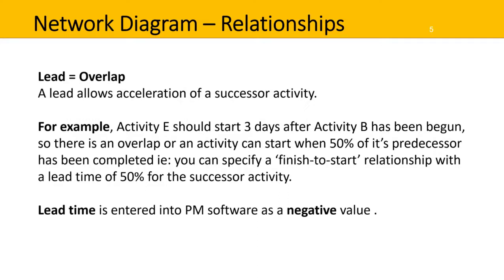Lead means having an overlap and allows acceleration of a successor activity, meaning you can start the activity sooner. For example, activity E should start three days after activity B has begun, so there's an overlap. Or an activity can start when 50% of its predecessor has been completed. That is, you can specify a finish-to-start relationship with a lead time of 50% for the successor activity. Lead time is entered into project management software as a negative value.